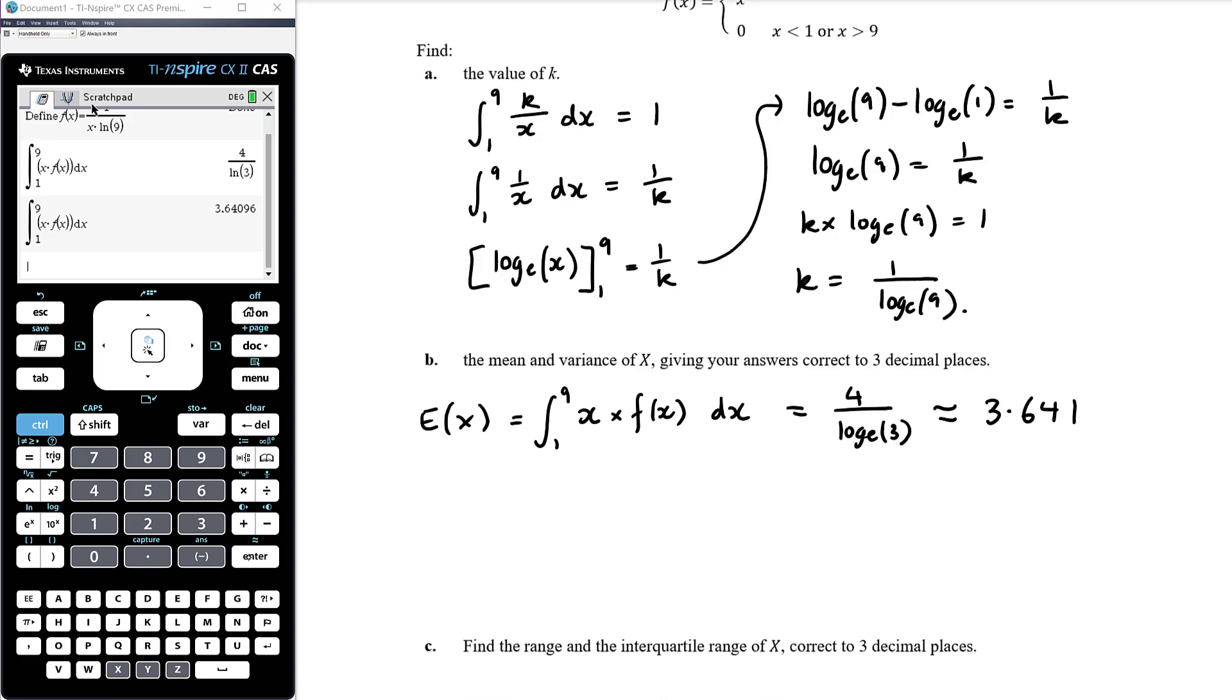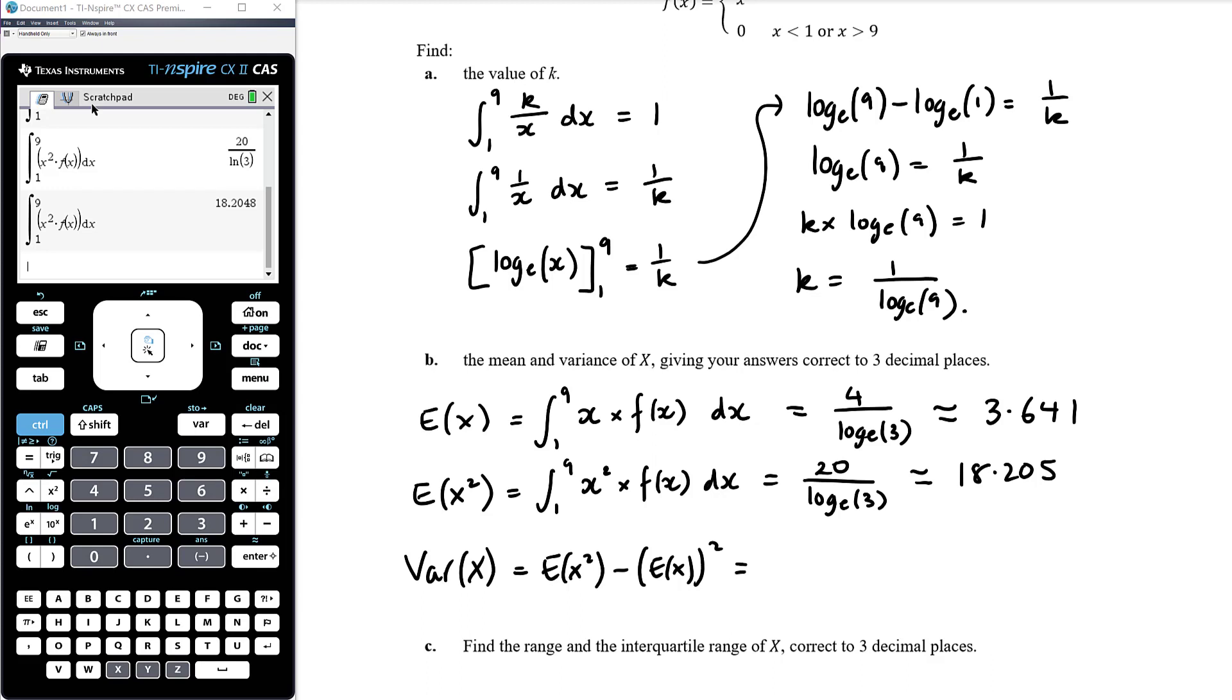And the variance of x, so before we can calculate variance, we're going to need expected value of x squared. So let's work that out as well. So same calculation except it is x squared times f of x. OK, so that is 20 on log e of three, which is approximately 18.205. And so therefore the variance of x is the expected value of x squared minus expected value of x all squared. So it is 18.205 minus 3.641 squared. So it is that minus that squared, which is to three decimal places, 4.948. So variance and expected value.